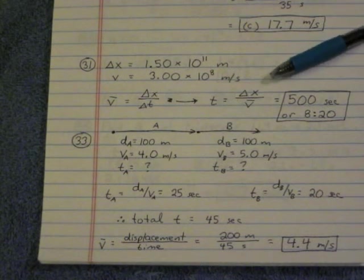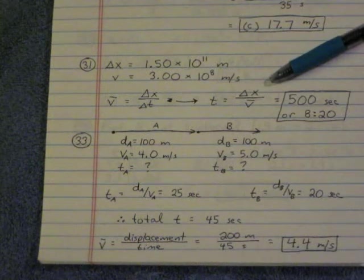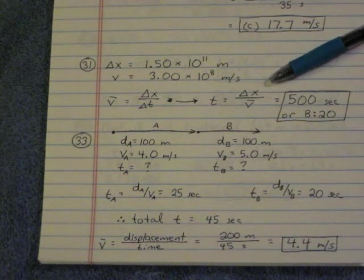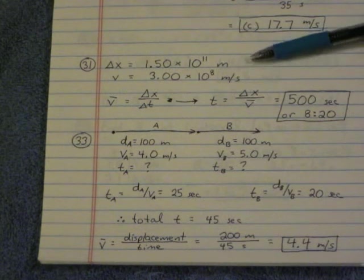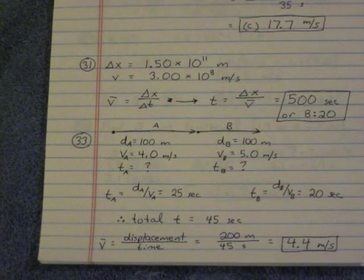So we take average velocity as displacement over time, but we solve that for time. So time is displacement over average velocity, and we divide those two values, and we get 500 seconds, or 8 minutes and 20 seconds.